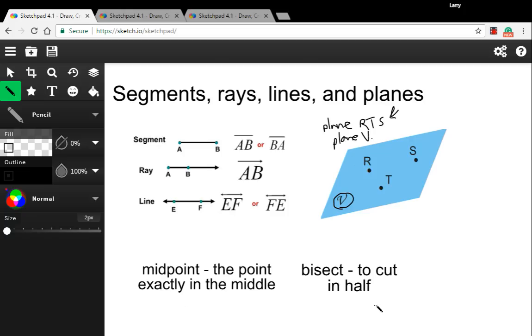A couple other concepts you need to know here. One is midpoint, and that's exactly what it sounds like. It's the point right in the middle of something, so it would note the halfway mark. And then bisect, which is related, to bisect something means to cut it in half. So if you bisect something, you're breaking it or cutting it at the midpoint. All right, let's look at a couple of problems.